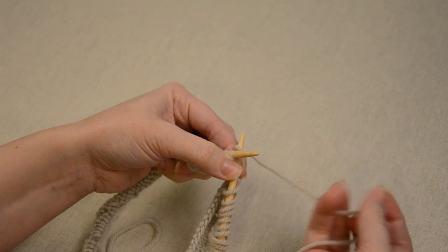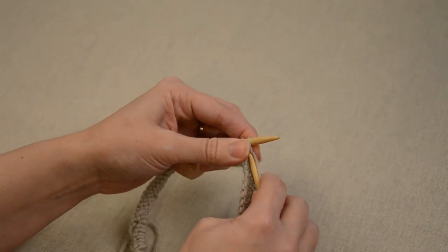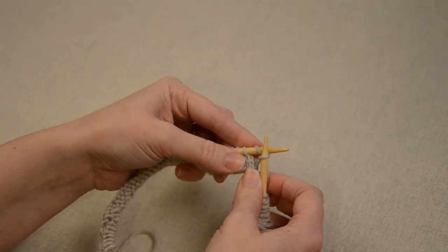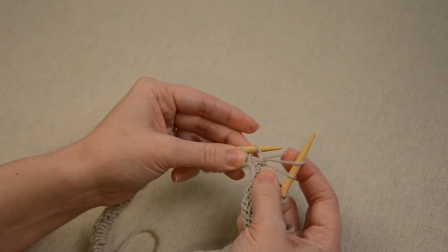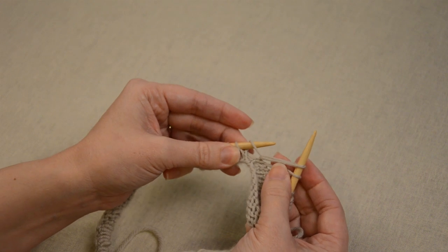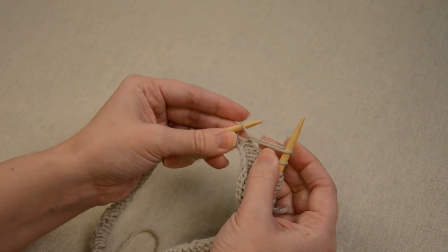Then when you pull up the stitch, before you actually pop it off the left hand needle, you want to elongate this stitch to about an inch and a half long.